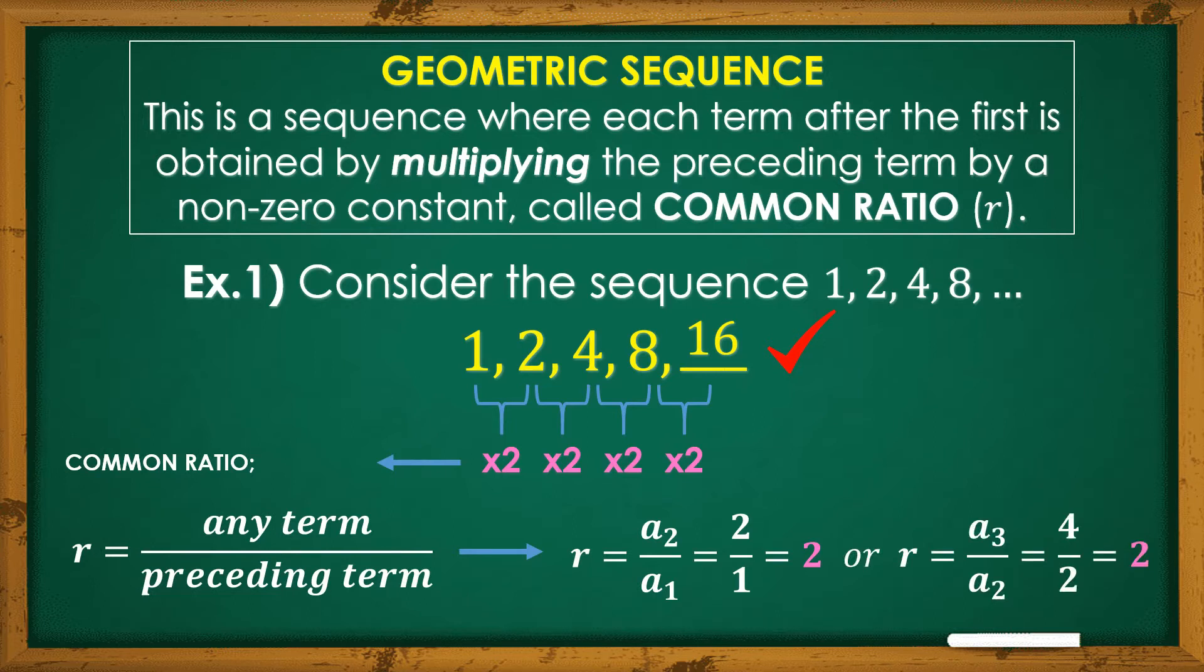Let's try a sub 3 and a sub 2. a sub 3 is 4, a sub 2 is 2, so 4 divided by 2 is also 2, which gives us the common ratio of this sequence.